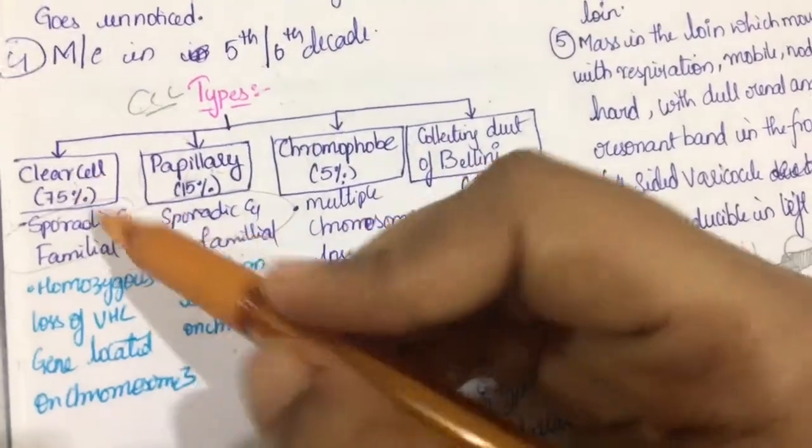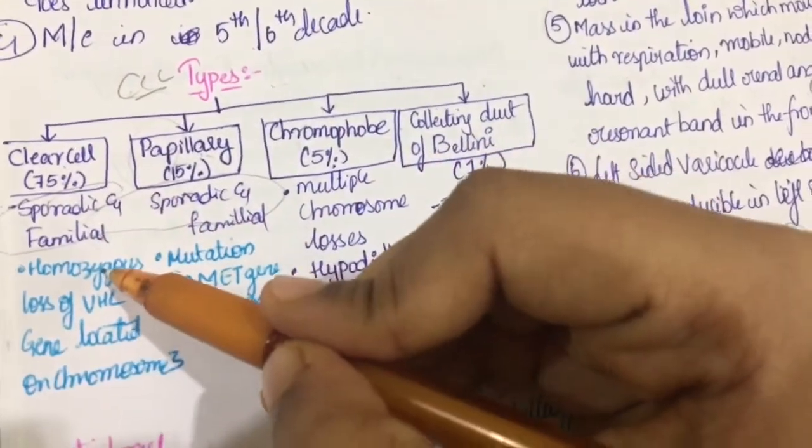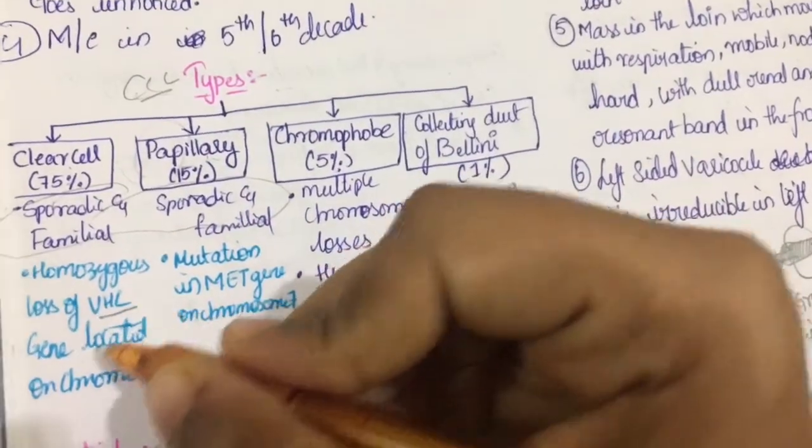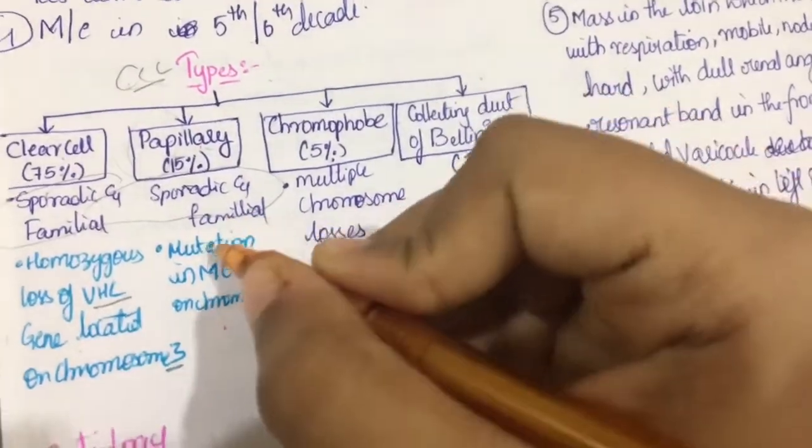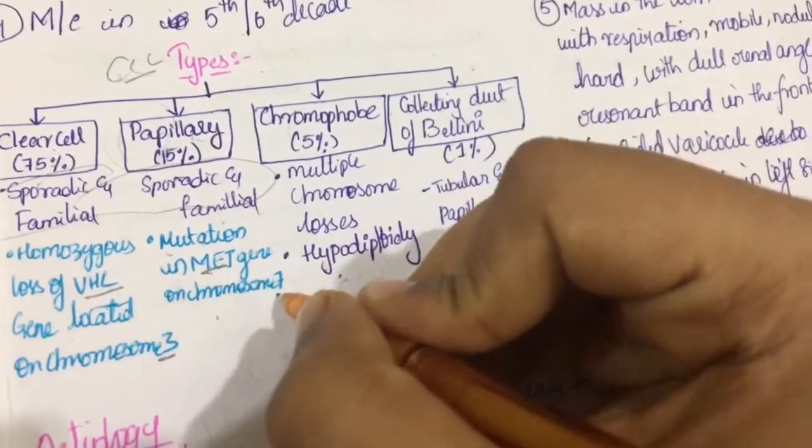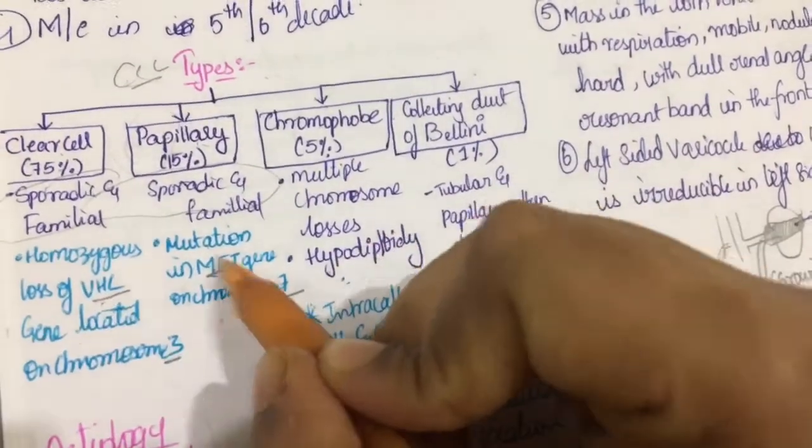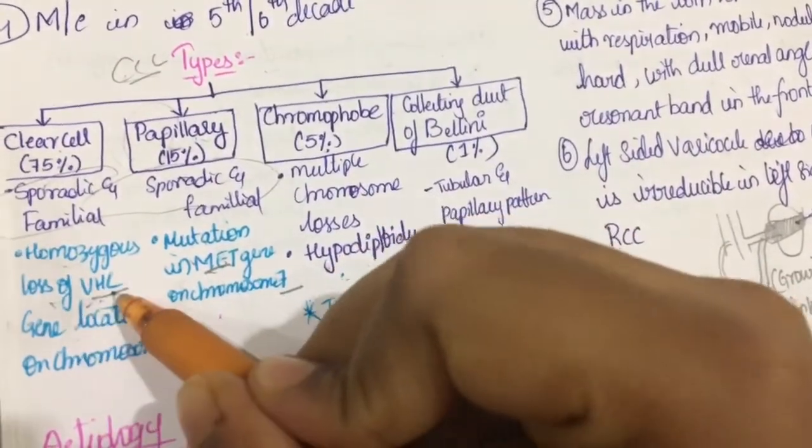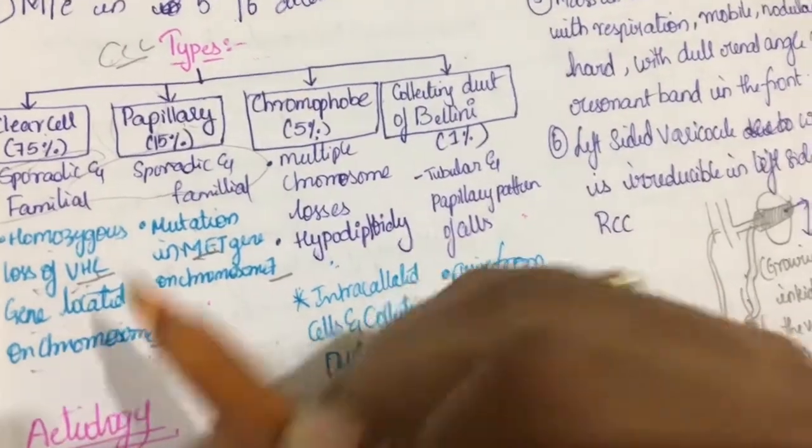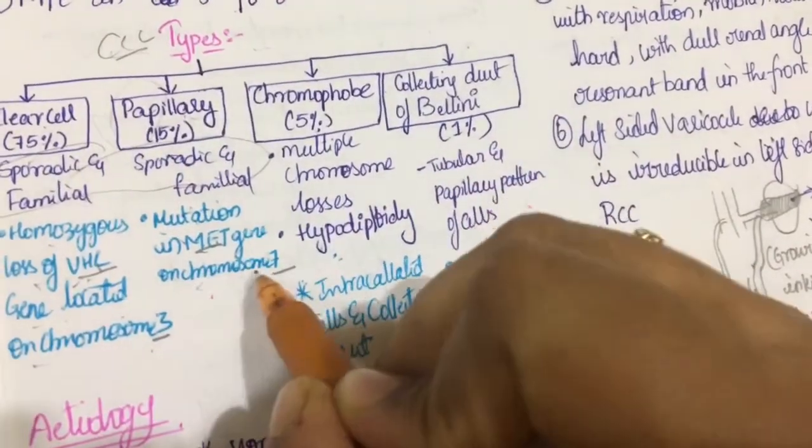First, we will see about clear cell carcinoma. They are homozygous with loss of VHL gene located on chromosome 3. There is mutation in MAT gene on chromosome 7. VHL, MAT. Homozygous loss of VHL gene located on chromosome 3. And mutation on MAT gene on chromosome 7.